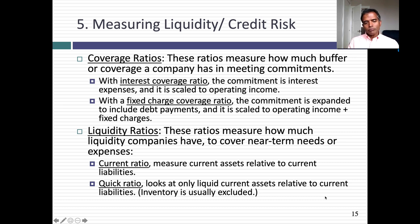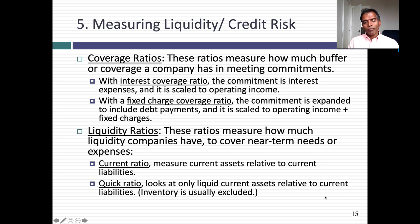Liquidity ratios measure near-term risk. The current ratio divides current assets by current liabilities — the higher, the more liquid you are, assuming current assets can be easily liquidated to pay off liabilities. But inventory may not be easily liquidated, so the quick ratio nets out inventory from current assets as a more conservative measure. Overall, ratios provide a scaled mechanism to compare across companies and across time. It's valuable to look at differences across companies and for your own company over time. Thank you very much for listening.